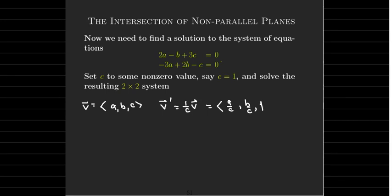which would be a over c, b over c, 1. So as long as the third component of my direction vector is non-zero, I could just go ahead and assume that the component is 1.